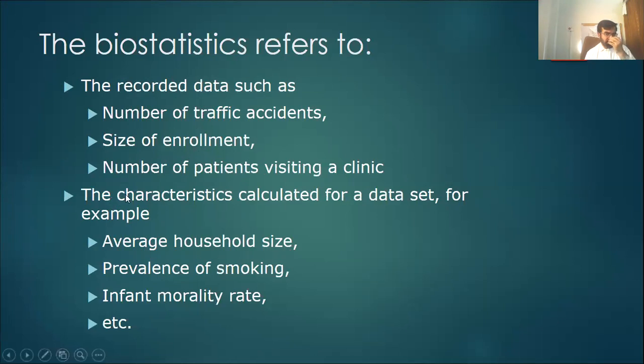In a particular family there are 10 people, five people, or four people - that makes the size of that house. Prevalence of smoking, for example: 10% of Pakistani population smoke, 20%, 15% - so that is a statistic. Infant mortality rate, for example in our country, the infant mortality rate is 74 out of 1,000, meaning out of 1,000 infants, 74 die in a year.